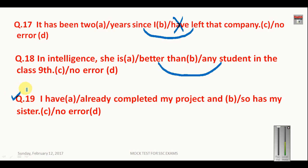Question number 19: I have already completed my project and so has my sister. So this is absolutely correct sentence and your answer here will be D.